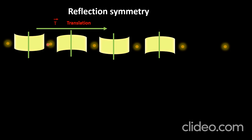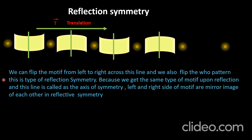Both sides of the axis of symmetry are mirror images of each other. We can flip the motif and the whole pattern from left to right across this line. This is reflection symmetry: we get the same type of motif upon reflection, and the axis is called the axis of symmetry. The left and right sides are mirror images of each other.